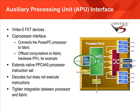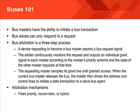Bus masters have the ability to initiate a transaction and effectively take control of a bus, while slaves only respond to master bus requests. Bus arbitration is a three-step process: a device requests to become the master by asserting a bus request signal; the arbitration logic — which is programmable through EDK — monitors the request and provides a grant signal according to the programmable priority scheme; and the requesting master samples the grant line, waits for the bus to be released, then initiates a data transaction to a slave. The arbitration mechanisms within EDK can be chosen by the designer, including fixed priority, round-robin, or a hybrid system.